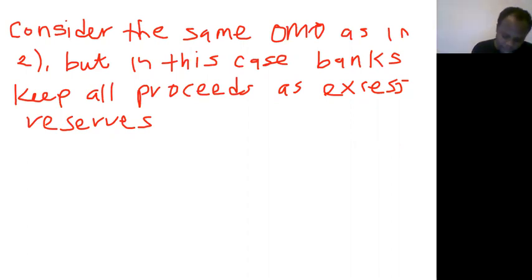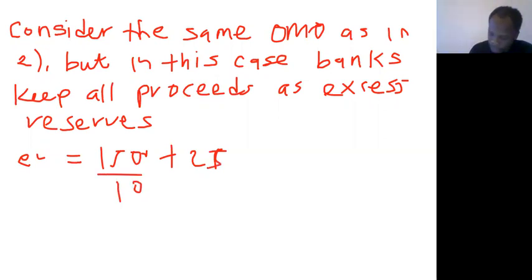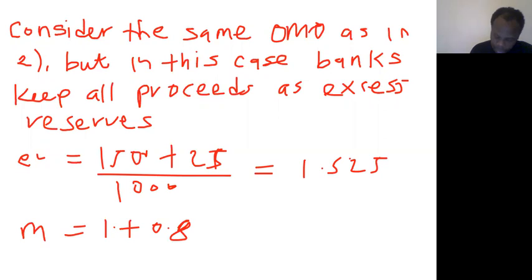In this case, the 1500 goes towards excess reserves. So our excess ratio now becomes 1500 plus the already 25 that we had, all over 1000, which gives you 1.525 as our excess ratio. This implies our money multiplier becomes 1.8 over (0.8 plus 0.1 plus 1.525).